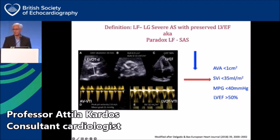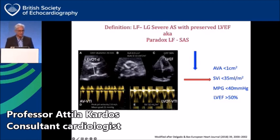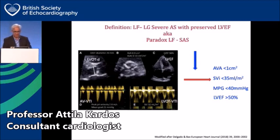The components we need to measure during acquisition to make the diagnosis of this phenotype include: the left ventricular outflow tract area derived from the LVOT diameter, the aortic valve appearance and degree of calcification, the aortic valve VTI and LVOT VTI, and of course ejection fraction to complete the phenotype.